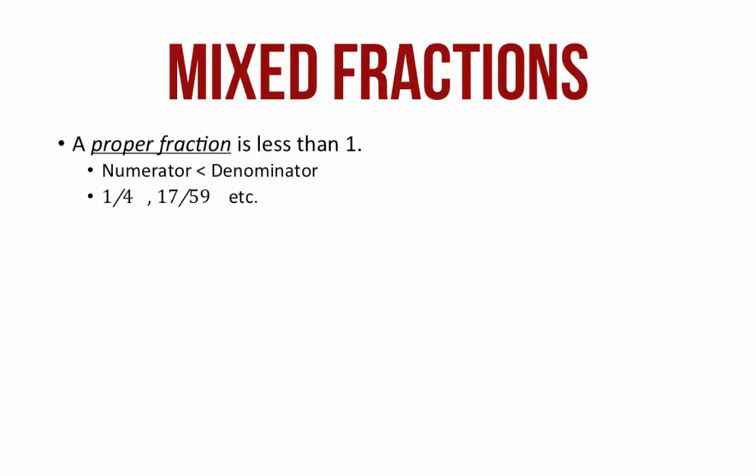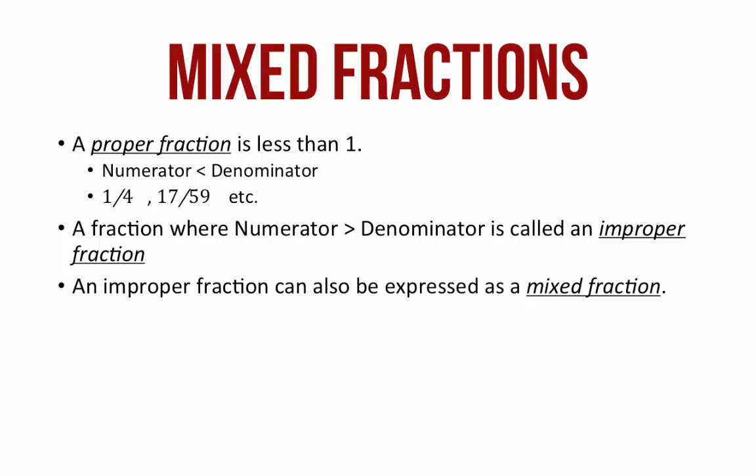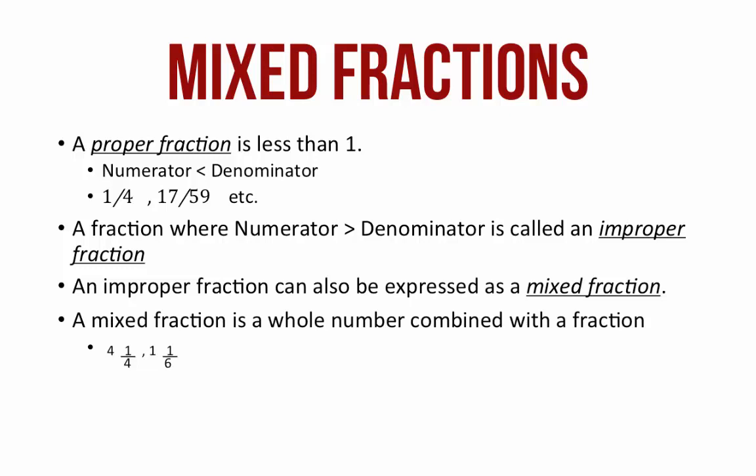A proper fraction is always less than 1, that is, the numerator is less than the denominator. For example, 1 by 4, 17 by 59, etc. A fraction where the numerator is greater than the denominator is called an improper fraction. An improper fraction can also be expressed as a mixed fraction. A mixed fraction is a whole number combined with a fraction. For example, 4 and 1 by 4, 1 and 1 by 6, etc.